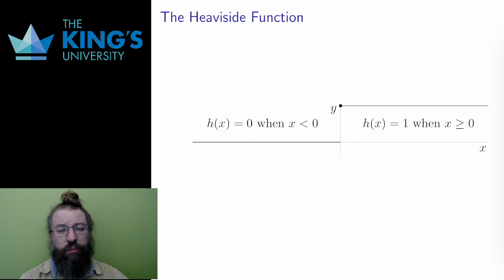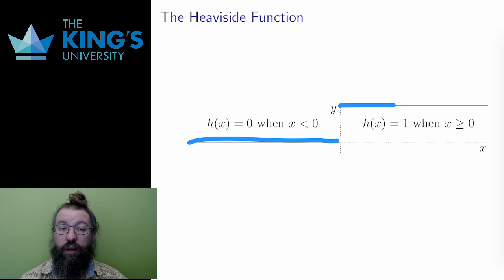So, if elementary functions are continuous on their domains, what might not be? Well, a function that has different definitions for different pieces of its domain may not be continuous. Consider this graph. This is a function h, which has constant value 0, when x is less than 0, but constant value 1, when x is larger than or equal to 0. This is called the Heaviside function.